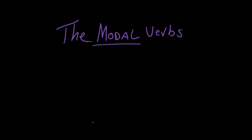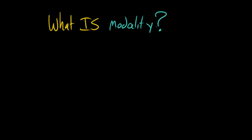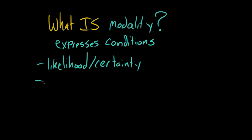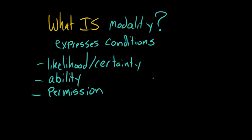But what is modality? Modality is when we use these verbs to express conditions on stuff. We can use these verbs to determine if something is likely to happen or certain to have happened, whether or not something is possible, whether or not we have the ability to do something, whether or not we have the permission to do something, and whether or not we have the obligation, requirement, or need to do something.